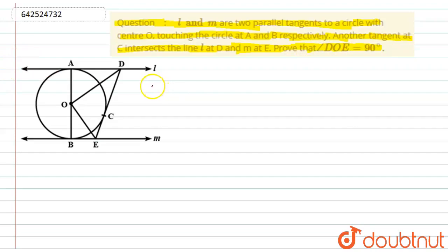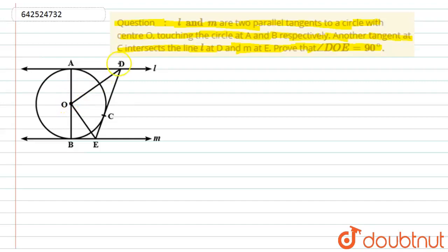So in this question we have a circle with center O on which there are two tangents L and M touching the circle at points A and B. There is another tangent touching the circle at point C and intersecting the previous two tangents L and M at D and E respectively. Now if we join O to D and O to E, this will form a triangle.